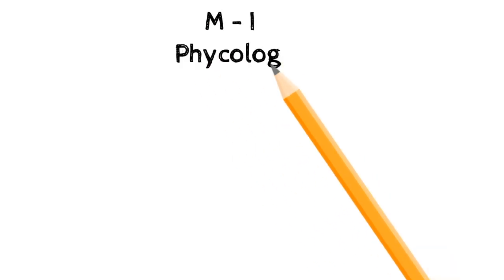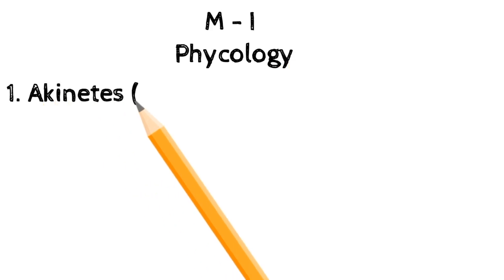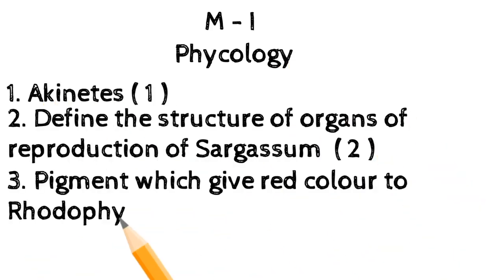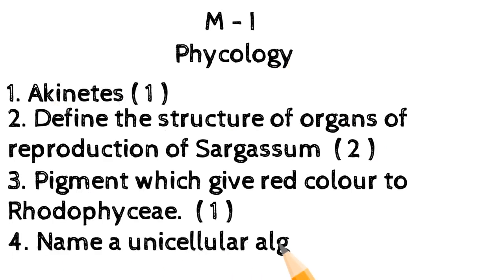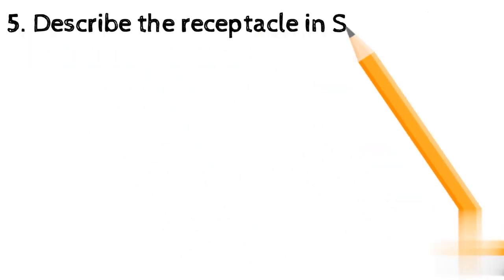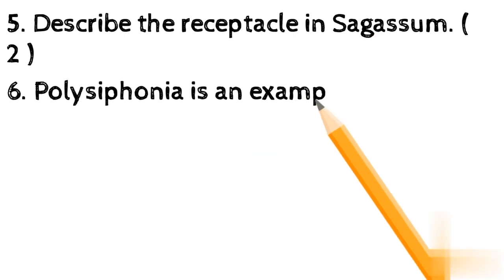M1 Phycology: 1. Akinetes (1 mark). 2. Define the structure of organs of reproduction of Sargassum (2 marks). 3. Pigment which give red color to Rhodophyceae (1 mark). 4. Name a unicellular algae (1 mark). 5. Describe the receptacle in Sargassum (2 marks).